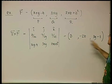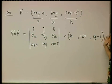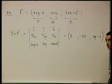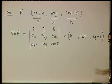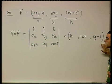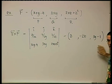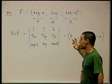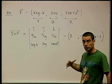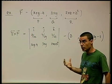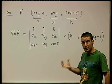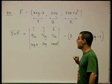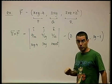So the curl of this vector field is (0, −2z, 3y−1). Again, it has three components, each a function of x, y, and z. The physical interpretation of the curl — what the curl is actually measuring — we'll discuss after we cover Stokes' theorem.